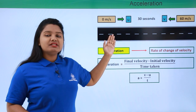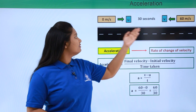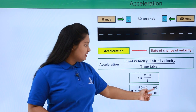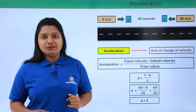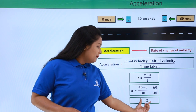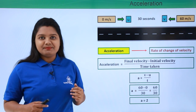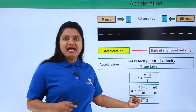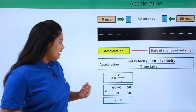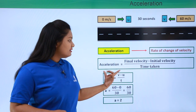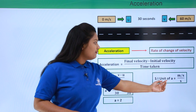Let's calculate the acceleration of this car using the formula. Acceleration = (60 − 0) / 30 = 60/30 = 2. But is something missing? Yes — the unit. Every physical quantity must be expressed with its unit, so we need to figure out the unit for acceleration.